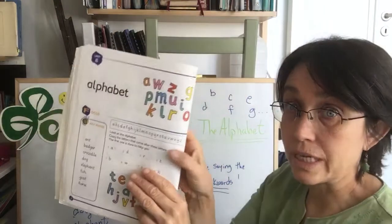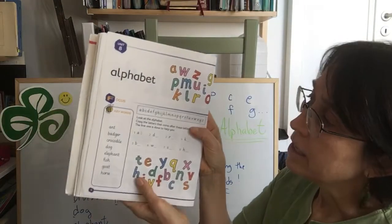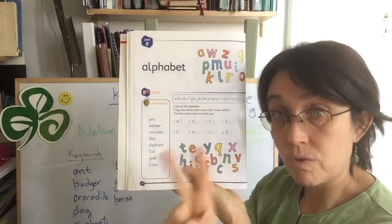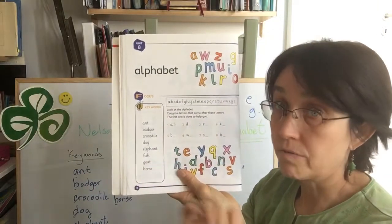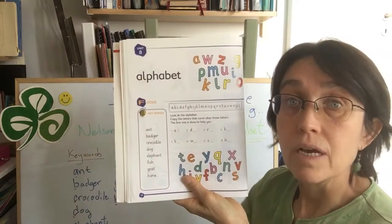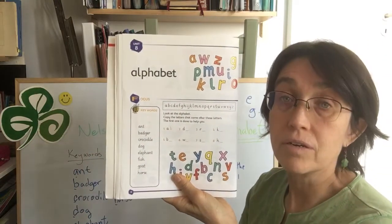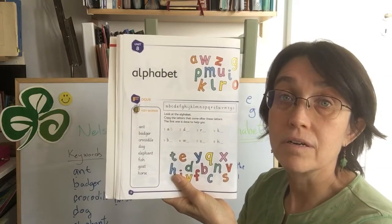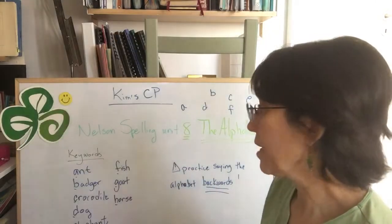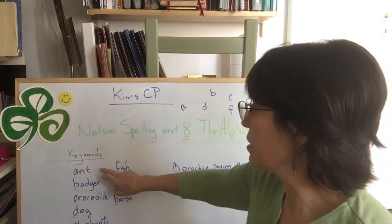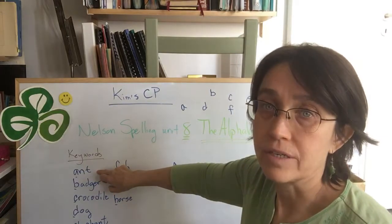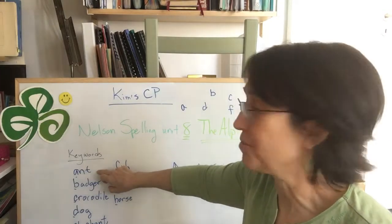We'll talk about dictionary use later. Now I'm going to say the key words twice — they're very easy. Each word is an animal and it's with the first letter of a letter in order in the alphabet. The first one is ant — that's an animal, an insect.